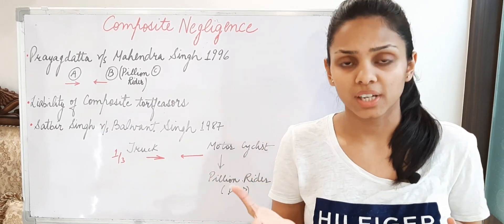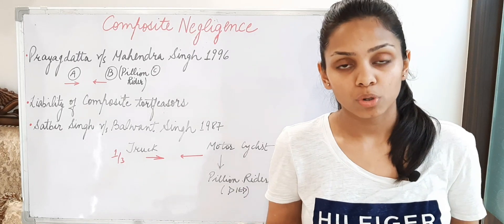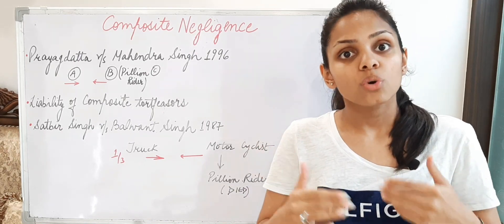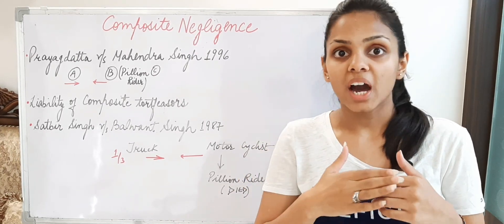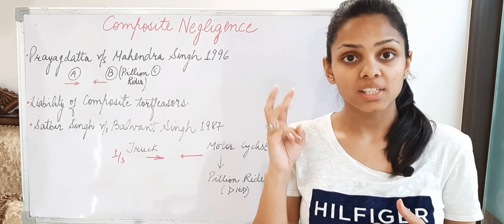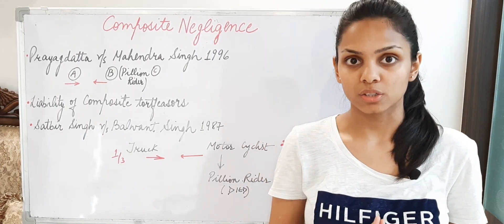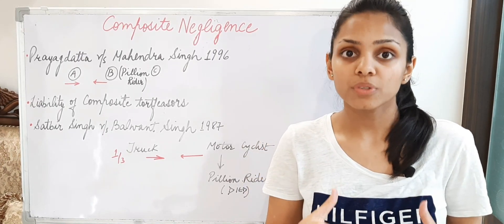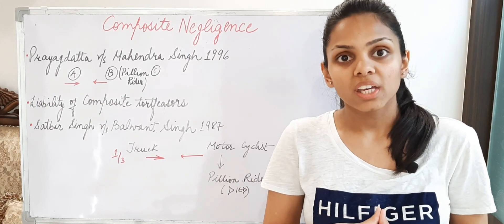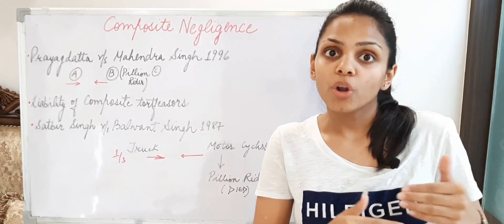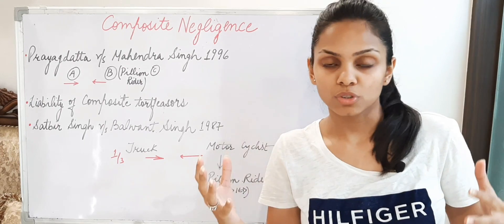But what is meant by composite negligence? Composite negligence means when two or more persons' negligent acts cause injury to a third party — that is termed as composite negligence. Here you have to note the difference from contributory negligence. Contributory negligence and composite negligence are different kinds of negligence.